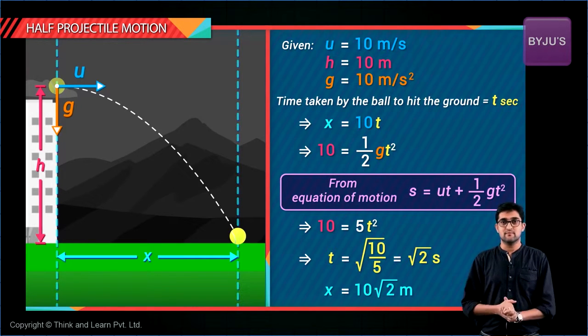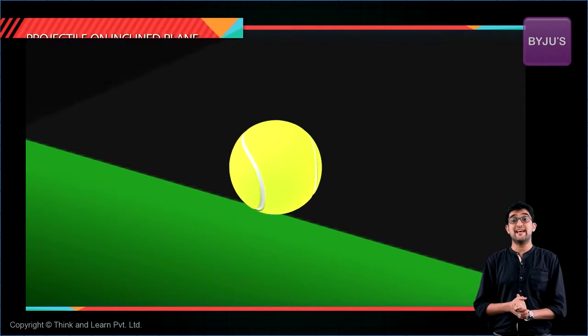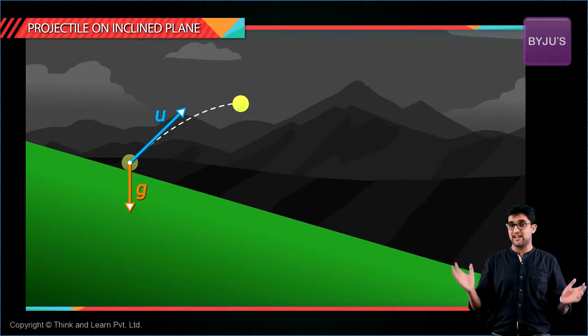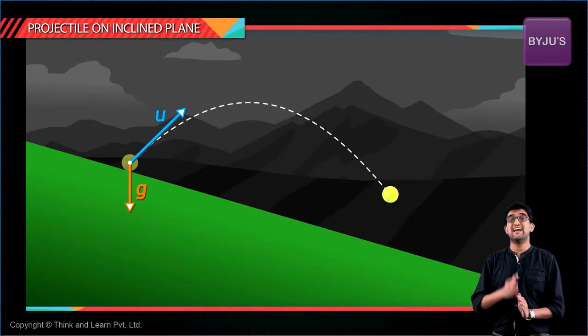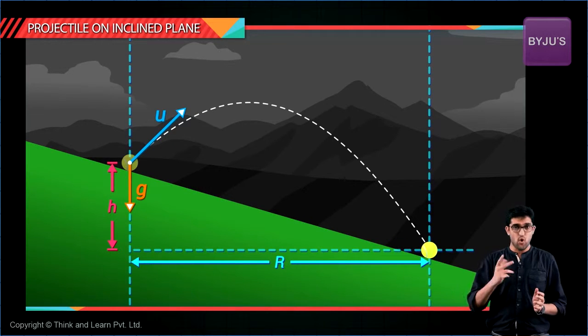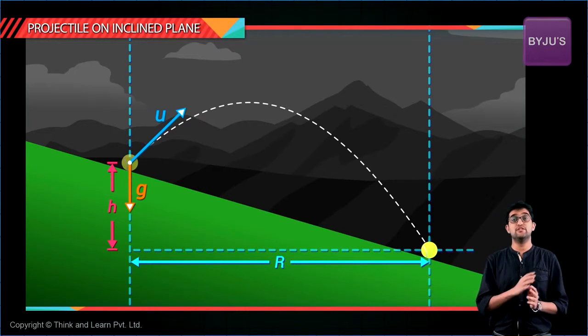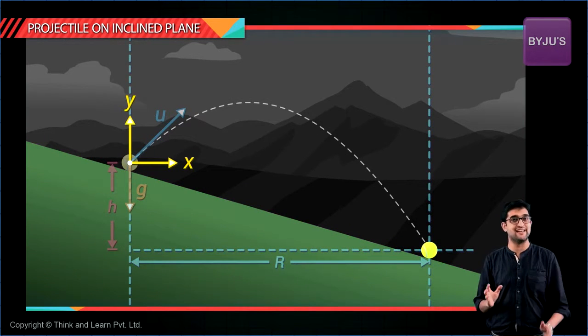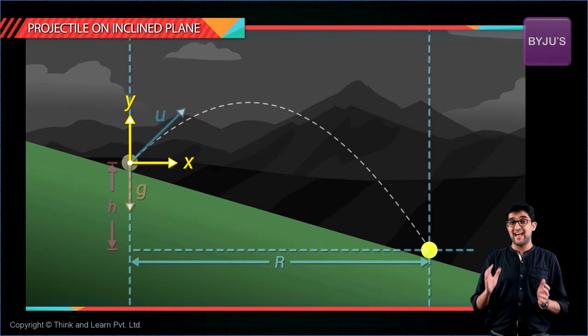meters. Very simple. On similar lines, if we get a projectile on an inclined plane, how do we solve it? Use the exact same method, the only difference being instead of using horizontal axis and vertical axis, use an axis